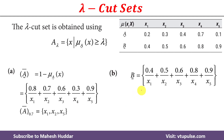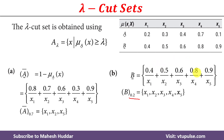Next we discuss how to calculate the lambda cut set of fuzzy set B. In this case the lambda value is 0.2. If you notice, the membership values of all members x1 to x5 are greater than or equal to 0.2 — that is 0.4, 0.5, 0.6, 0.8, and 0.9 — hence all members are present in the lambda cut set.